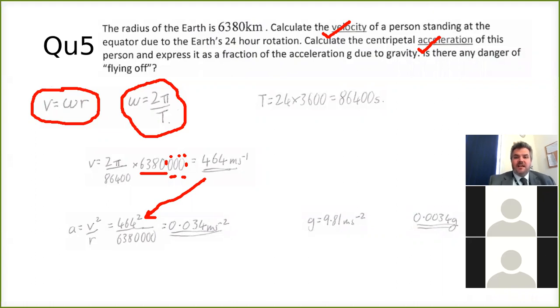So to do that, all you do is you divide it by the acceleration due to gravity, which is 9.81 meters per second squared, which leaves you with 0.0034g. That's your answer. And then we've got the last bit of the question. Is there any danger of flying off? Well, if that's the acceleration pulling you towards the center of the earth, that's the acceleration trying to make you fly off. You can see that it's a tiny value compared to g. So there is no danger of flying off. In fact, that makes sense, doesn't it? Because you see people who live at the equator in tropical countries, and they don't fly off every time they jump.